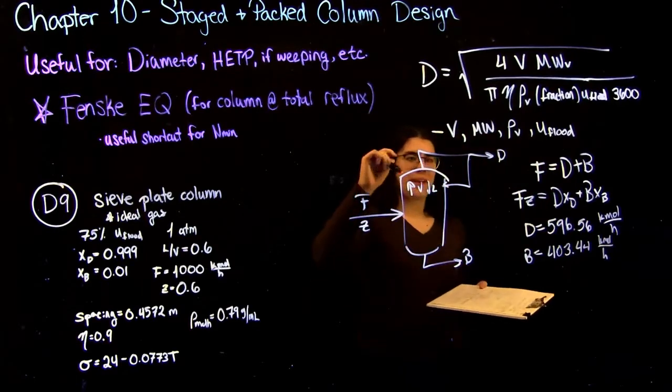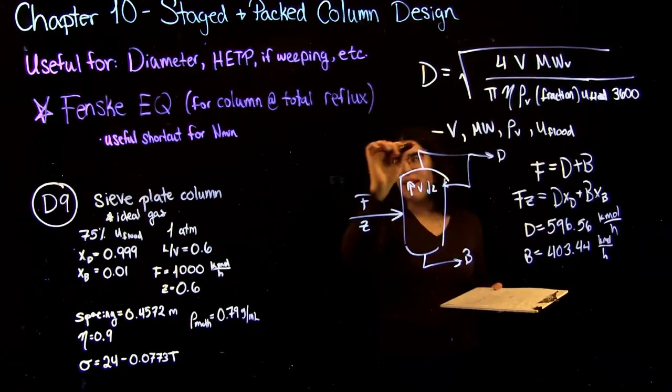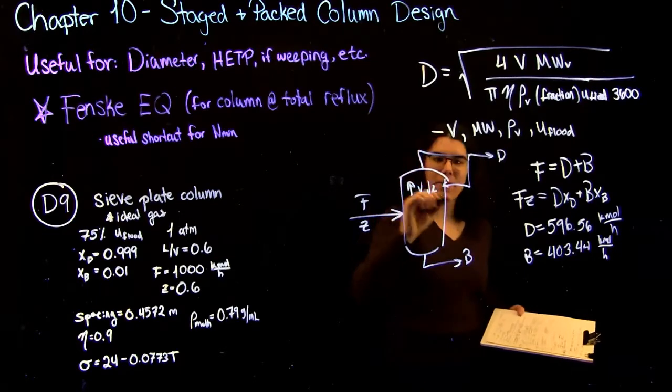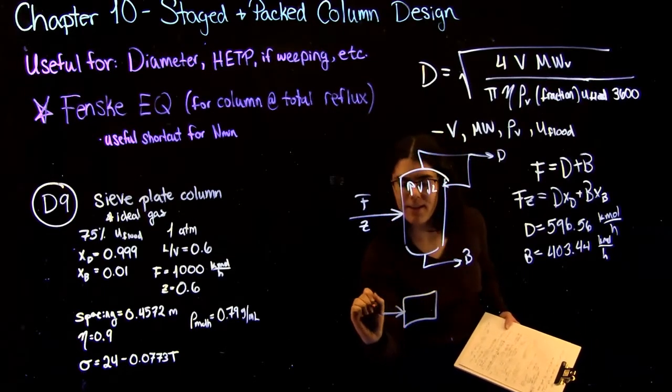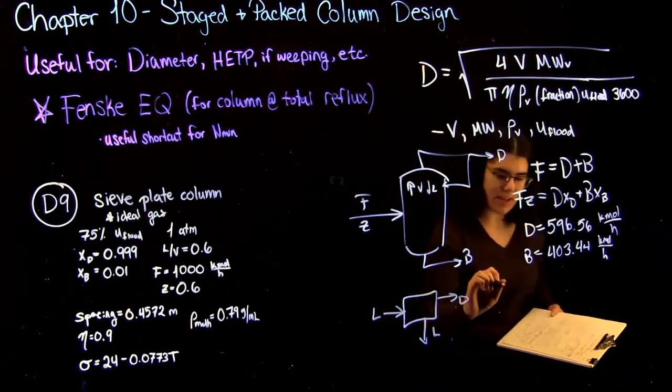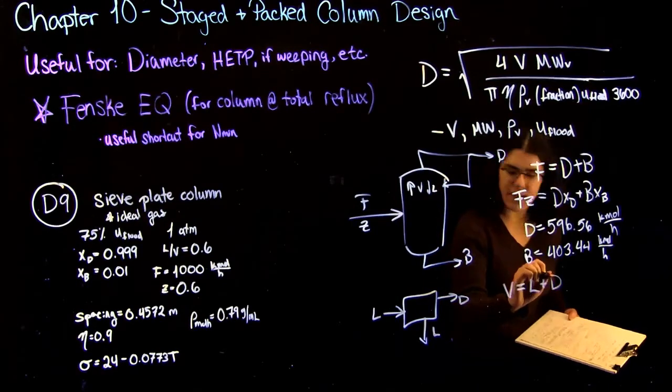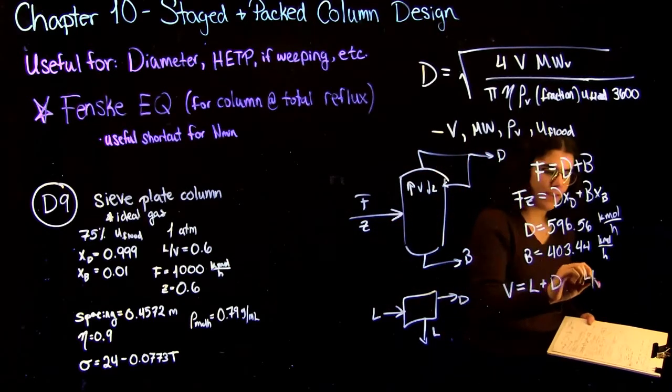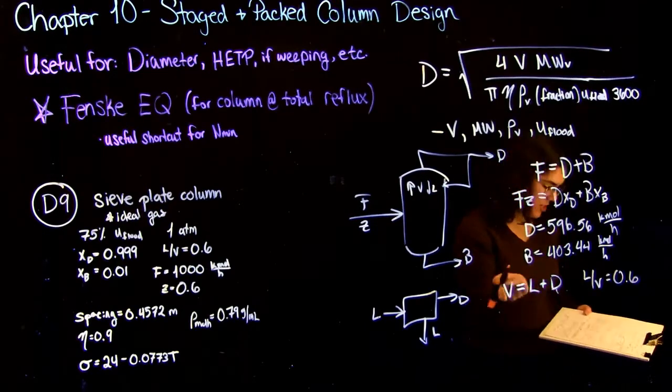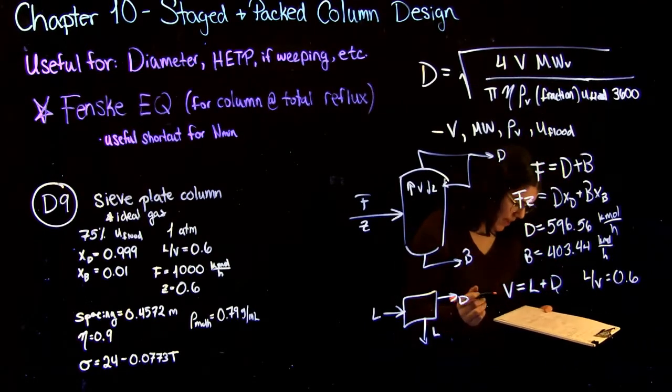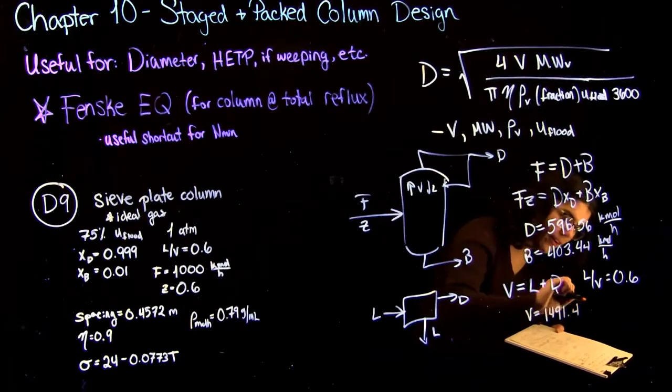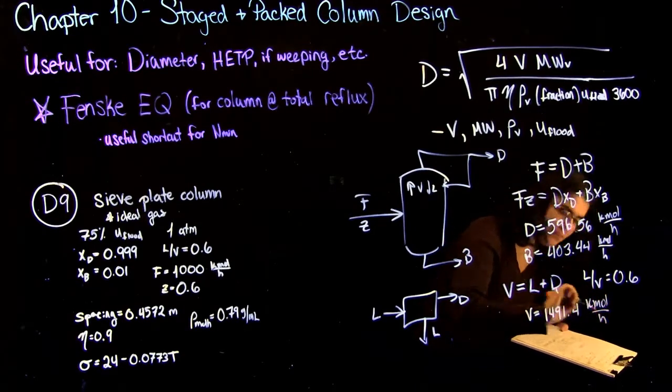So now the other balance you can perform around your column is right at the top, because as the question told us, we're going to be focusing on just the top of the column. So you can see, if you do a little balance here, with the vapor coming in, the liquid also comes out, and D also comes out. So that means that V equals L plus D. You also have the other piece of information that L over V equals 0.6. So since you just calculated D, now you just have two equations and two unknowns. So you can find that your V is equal to 1491.4 kilomoles per hour.